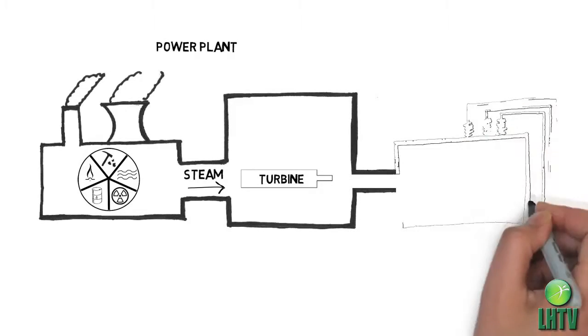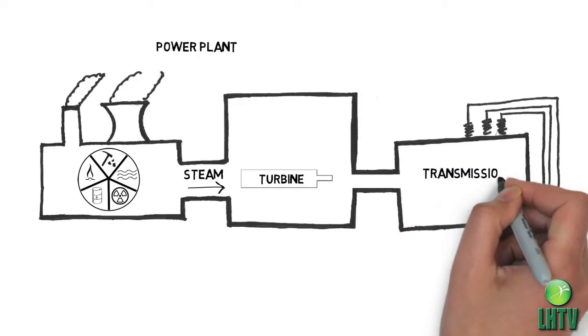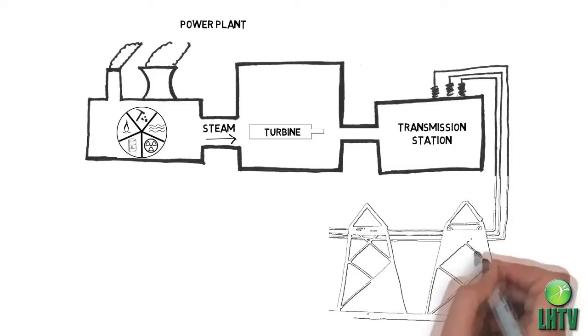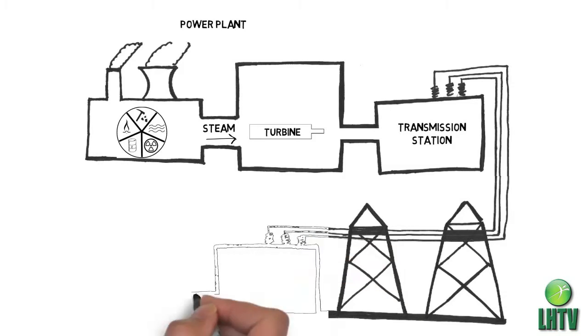That electricity leaves the plant and goes to a transmission station that jacks the potential up to hundreds of thousands of volts.